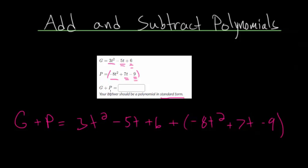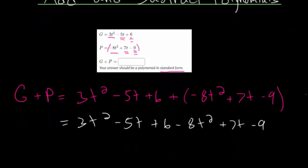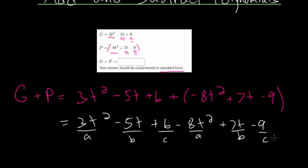The parentheses really only matter when we're doing subtraction, but I wanted to point that out now so that when we do come to a subtraction problem, it makes more sense. We can just drop these parentheses, because we're just adding this expression — it's like multiplying the expression by positive 1, which won't change anything. Let's rewrite it without the parentheses, and from here we just want to combine the like terms. Let's do the t squared terms — I'll call those the A terms. The t terms can be the B terms, and the constants we'll call C, just to keep it organized.